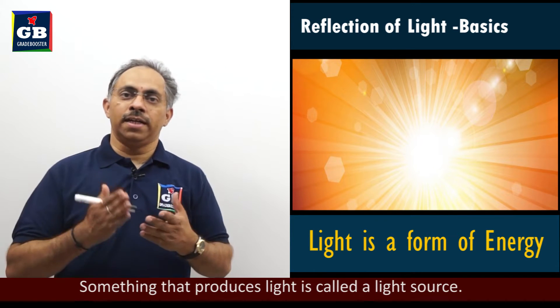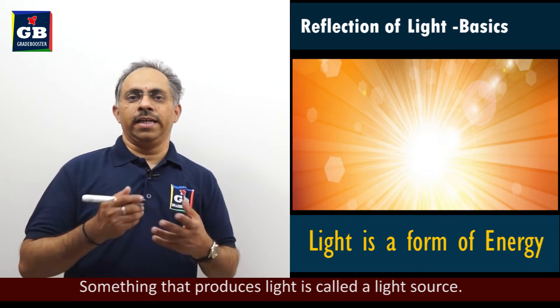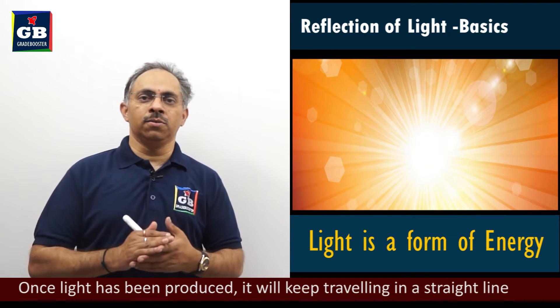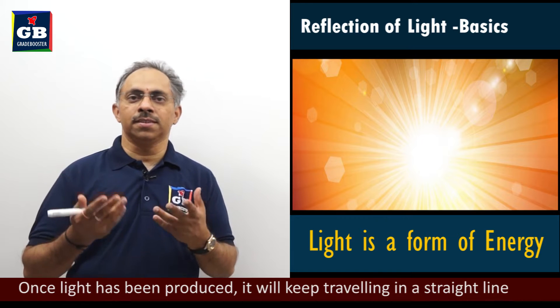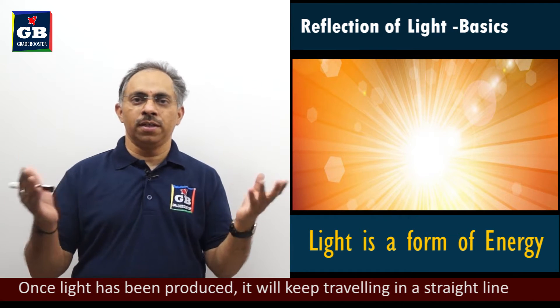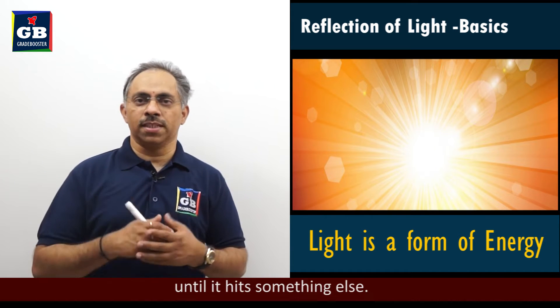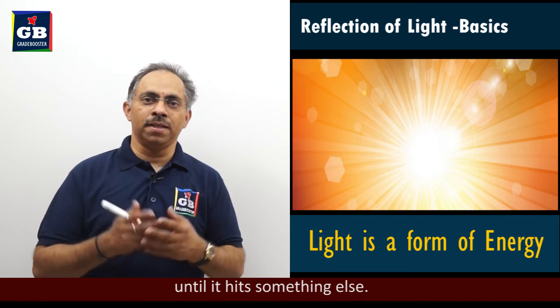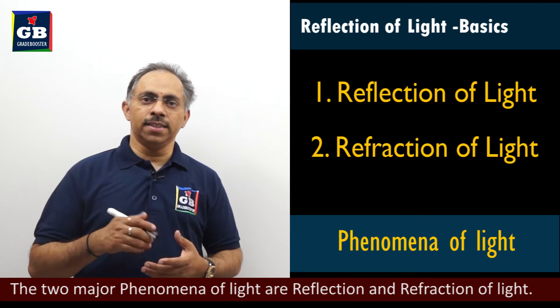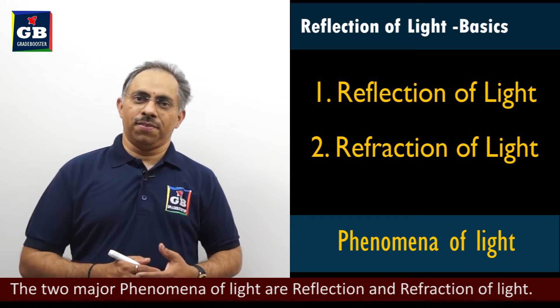There are different phenomena related to light. Before we go ahead with studying what is light and what are the different phenomena, there are two major phenomena related to light which help us see the things around us. The very beautiful world around us, we will be able to look at, observe the things, objects around us. All this is happening because of two major phenomena. One is reflection of light, another is refraction of light. So first we start with reflection of light.